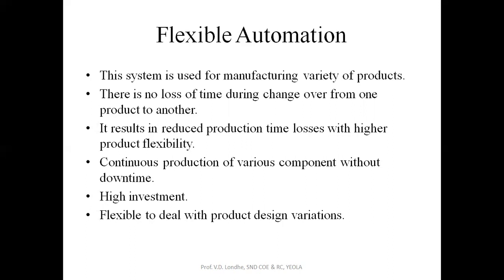With flexible automation, production time loss will be less and productivity will be high, giving flexibility in production. Continuous production of a combination of multiple products — two, three, or more different products — can be achieved on this flexible automation line without any downtime. There is no need to stop the process line or production line; changes can be made with the help of flexible automation.